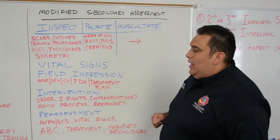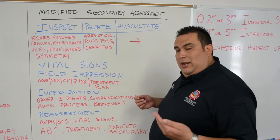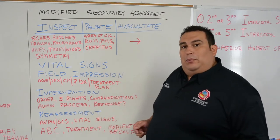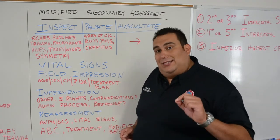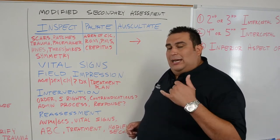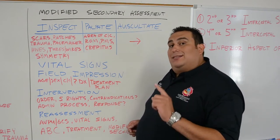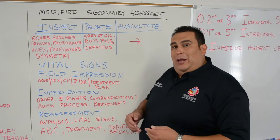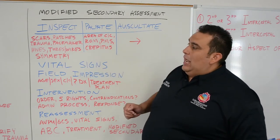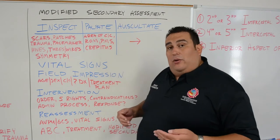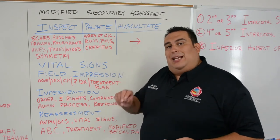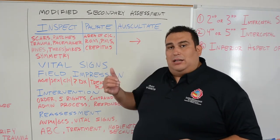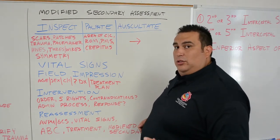Once I have the treatment plan in place, my intervention is where we put it into actual action. Regarding medications that an EMT would assist or administer, we look at the order. For nitroglycerin, you have a standing order — meaning you can do it without contacting medical direction. I have a standing order to assist up to three doses, including what the patient took prior to arrival. If the patient took one before our arrival, I can assist up to two more times on standing order. After that, I would need online medical direction and contact the hospital for further direction.